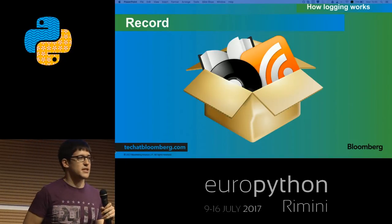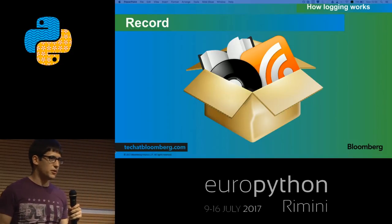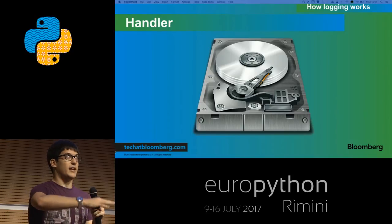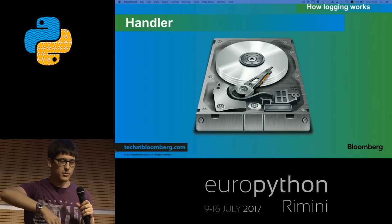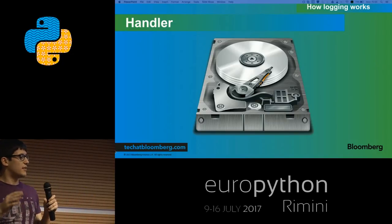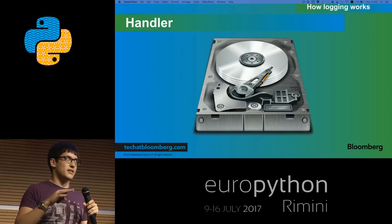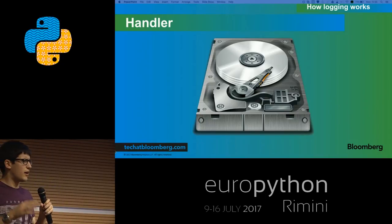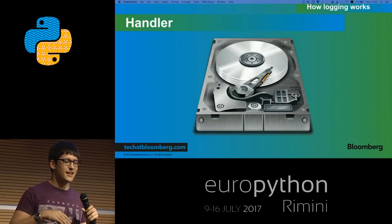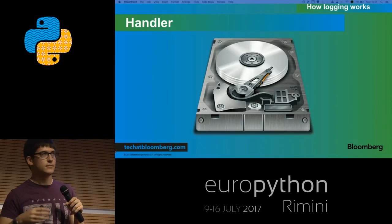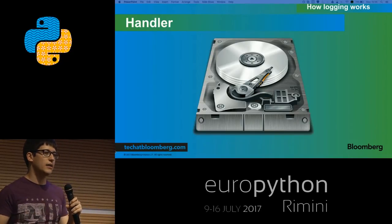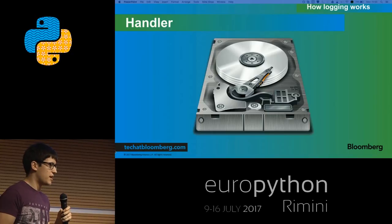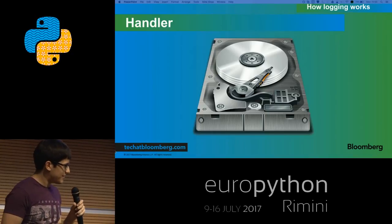That's where we use handlers. We have seen logger records and logger objects, and now we have handlers. Handlers are objects that allow you to print things to a file or to a console, and there are many handlers already in the built-in logging module. For example, you can log to a file, to the console, via HTTP, to a socket, or via email. Check the slides for the full list.